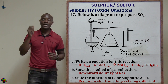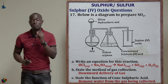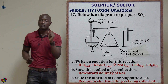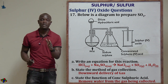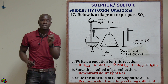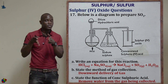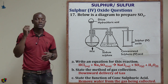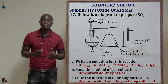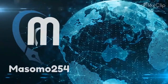Part C asks: state the function of concentrated sulfuric acid. The function of the concentrated sulfuric acid is to dehydrate or remove water vapor from the gas being collected. It must be concentrated sulfuric acid — not dilute — which removes water vapor from the gas.